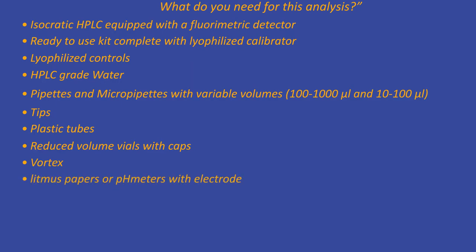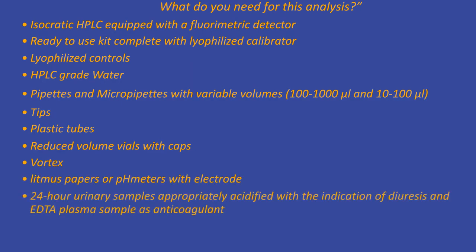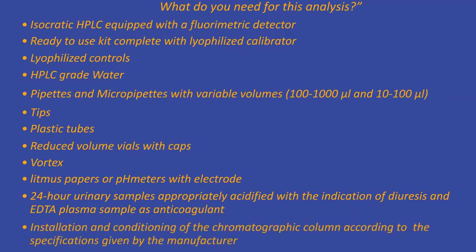Litmus paper or pH meters with electrode. 24-hour urinary samples appropriately acidified with indication of diuresis and EDTA plasma sample as anticoagulant, and installation and conditioning of the chromatographic column according to the specifications given by the manufacturer.